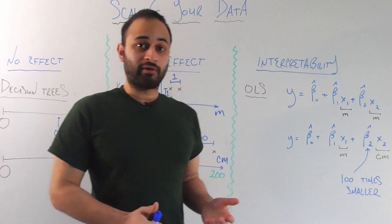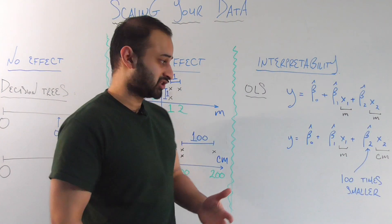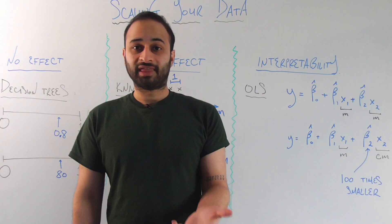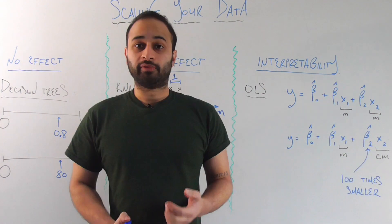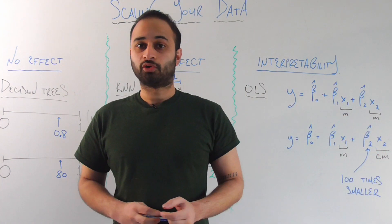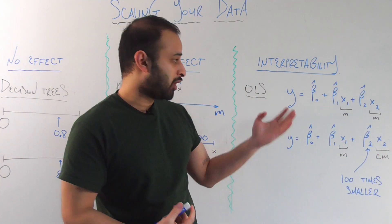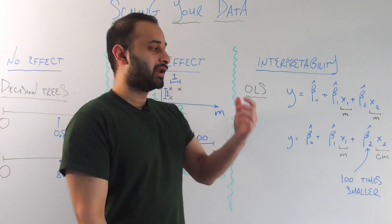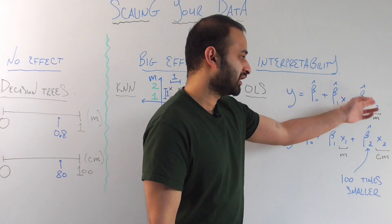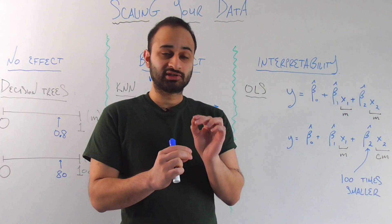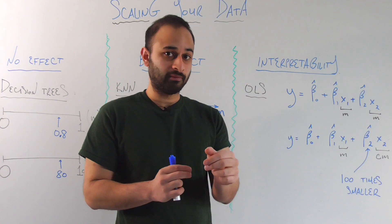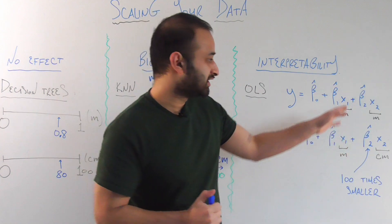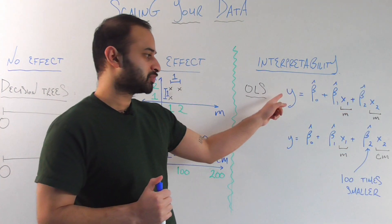Now the issue arises if one of our variables is on a different scale. For example, if x2 is now in centimeters, let's logically think through what that does to beta2 now. So before we were saying that a one meter increase in x2 is going to increase the response variable y by beta2. That's just the interpretation of ordinary least squares coefficients. Now just because we have chosen to represent this in centimeters instead, that story still stays the same. So we're saying that still a one meter increase in x2 is going to need to lead to the same beta2 increase in our response variable.